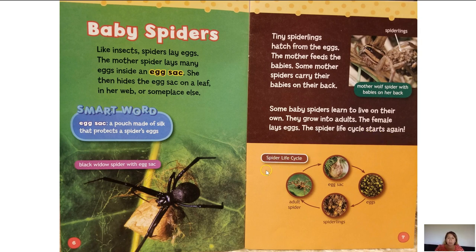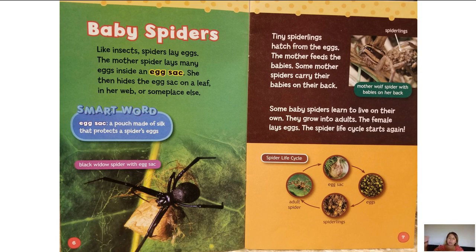This is the spider life cycle. First the adult spider, then it has an egg sack — that's the egg sack of a black widow spider. Then we see the eggs, then the spiderlings on top of the wolf spider, and then the adult spider again. The cycle continues over and over — the baby spiders get older, become adult spiders, lay eggs, and it starts all over again.